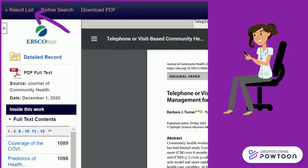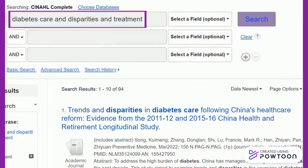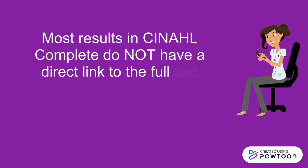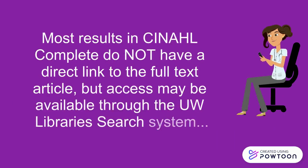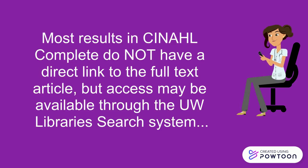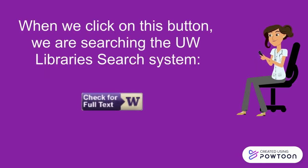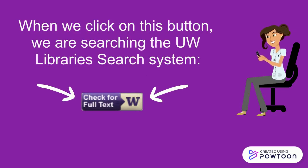Clicking on Results List brings us back to our original search results for Diabetes Care, Disparities, and Treatment. Most results in CINAHL Complete do not have a direct link to the full-text article, but access may be available through the UW Libraries search system. The button to search for full-text in the UW Libraries search is purple and gold, with the words Check for Full Text.